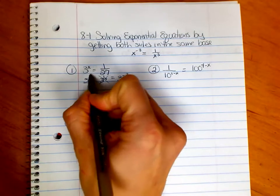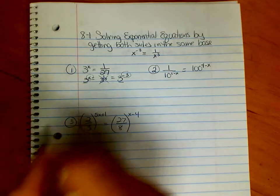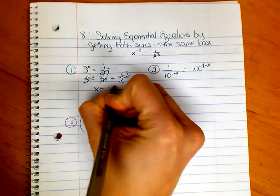So it's no longer that, it's this. And once I get my bases the same, then what do I know about my x's? They're going to be the same. So x, in this case, is equal to negative 3.